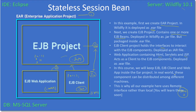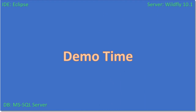In the real world these components can be distributed among different machines, which is why our example uses the remote interface. Here, since every component runs under a single JVM, we could use the local interface, but the remote interface has more advantages. It is slightly slower than the local interface but is highly scalable. Once you distribute your components, you don't need to change the code since it is already using remote interfaces. Now we will create all these projects — let's go to the demo.